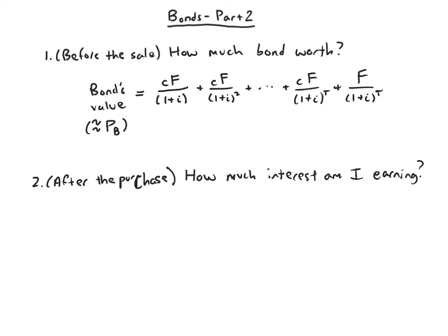What you'd think we'd get is an equation that says i, the yield, equals blah, blah, blah. Unfortunately, the way the math works out is that we actually can't get a nice simple equation or even a complicated equation that tells us how to calculate i directly.